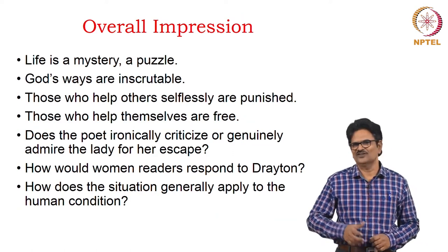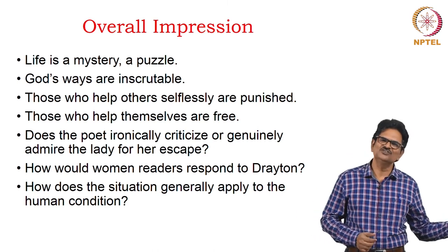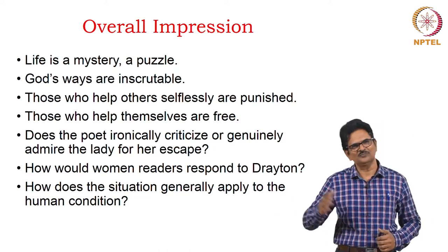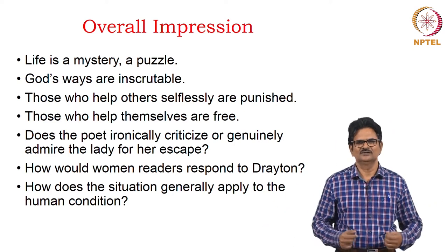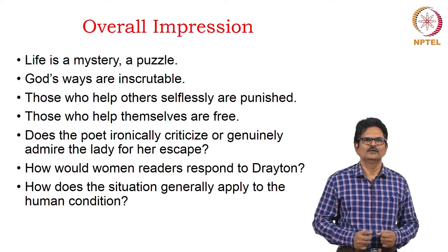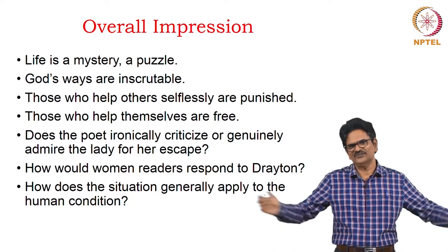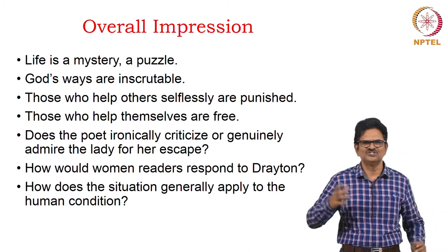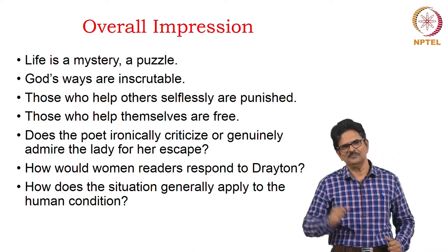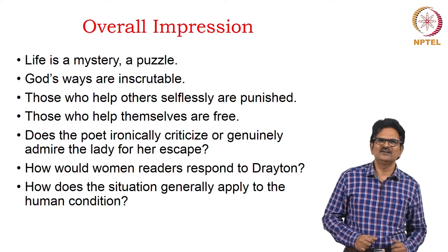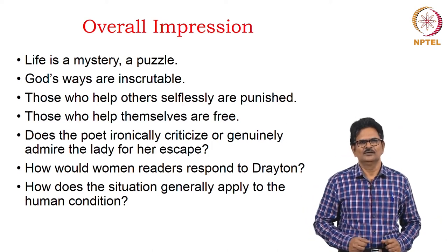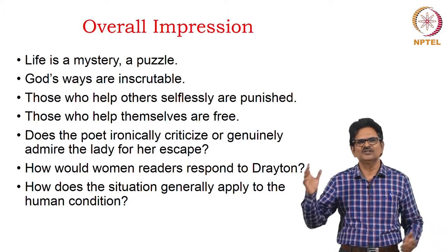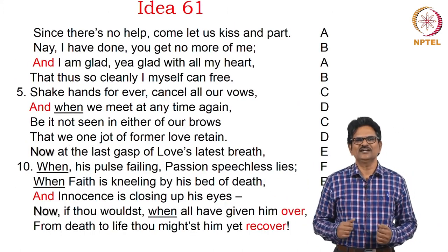Life is a mystery — it is also a puzzle. We say God's ways are inscrutable. Those who help others selflessly are punished — it is a common phenomenon that we see for ourselves. Those who help themselves somehow are free. So there is a question for us: does the poet ironically criticize or genuinely admire the lady for her escape? How would women readers respond to Drayton today? We also have a question relating to the human condition: how does this situation apply generally? Now we go to the second poem, Idea 61.